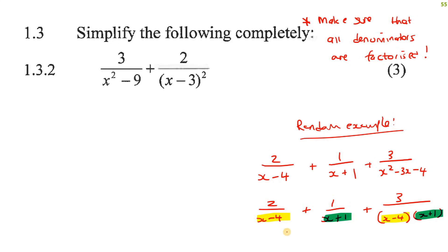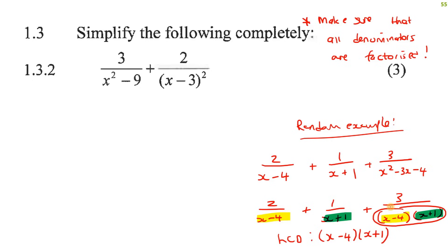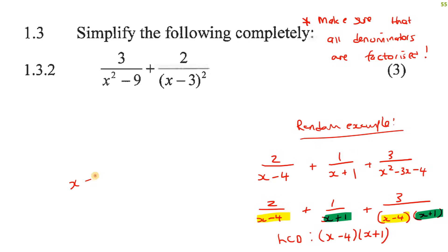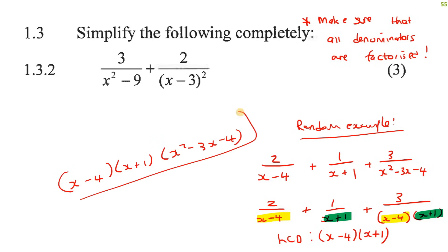All of a sudden, your lowest common denominator is now very easy — it's just the yellow bracket and the green bracket. This one only needs to be multiplied by the green one, this one only by the yellow one, and this one doesn't need to be multiplied by anything because it already is the common denominator. But if you hadn't factorized, you would have thought this was complicated and used all three — x minus 4, x plus 1, and x squared minus 3x minus 4 — as your common denominator, which makes life really complicated.